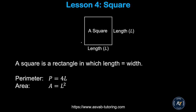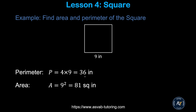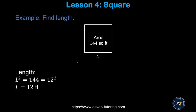Now we'll learn how to find the area and perimeter of a square. A square is a four-sided shape where all sides are the same, so length and width are equal. The perimeter of a square is 4L and the area equals L squared. For a square with one side equal to 9, the perimeter is 9 times 4 equals 36, and the area equals 9 squared, which is 81 square inches.